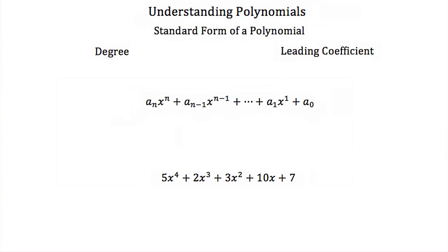Now that we know what a polynomial is, let's talk about the standard form of a polynomial. The standard form is just a way of writing the polynomial. It's written as a_n times x to the n, plus a_(n minus 1) times x to the n minus 1, and so on down to a_1 times x to the first, plus a_0. You can think of a_0 as times x to the 0, but x to the 0 is just 1, so we usually don't write that.